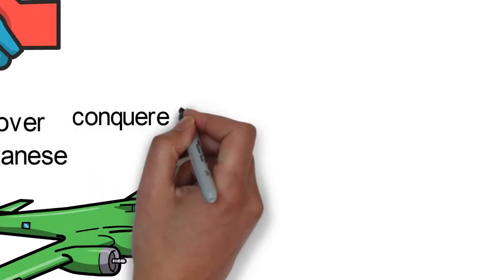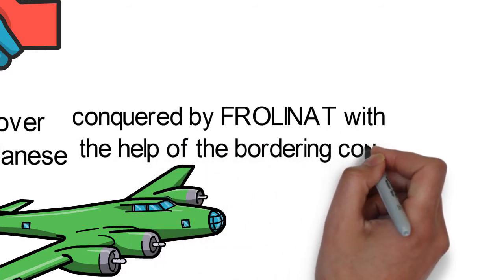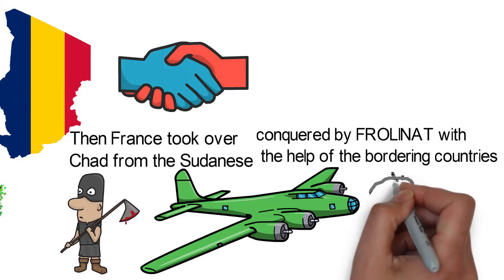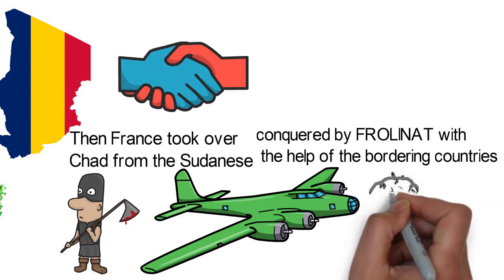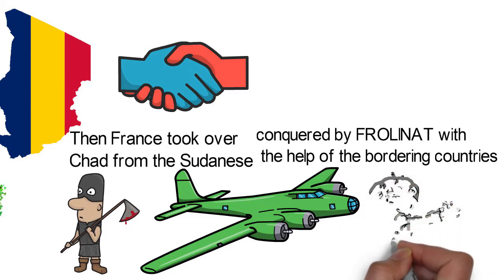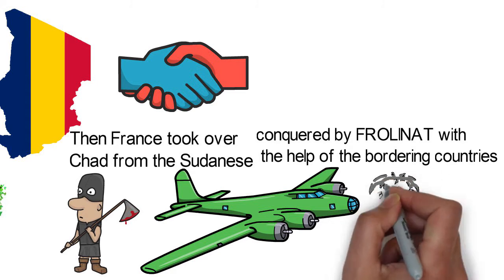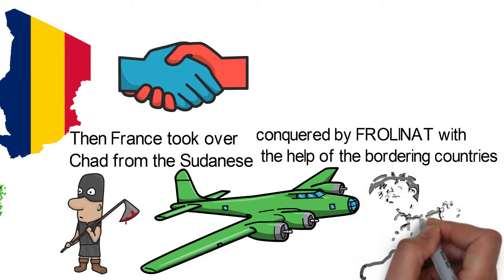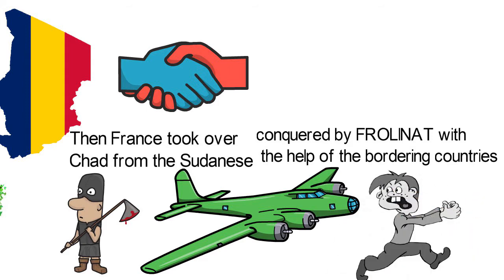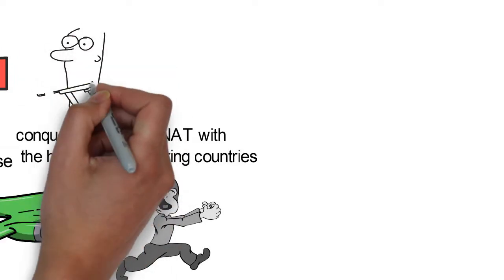N'Djamena, the capital of Chad, was conquered by Frolinat with the help of the bordering countries. Another organization named National Union Government of Transition was created, and Gukuni Wedeye was chosen as president to lead the organization and return harmony. But he fled to Libya after some years as the rebellion grew tougher.